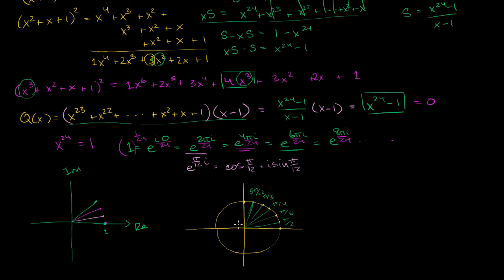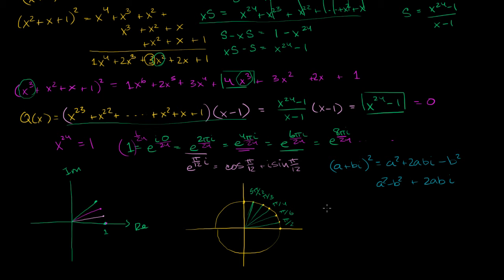Before we keep going, this will simplify the math a bit. Remember, we're going to have to square these roots. So if we have some complex number a + bi, let's think about what happens when we square it. This is going to be a² + 2abi − b², or (a² − b²) + 2abi. So the imaginary part is 2ab, and all that matters is the absolute value of 2ab, or 2 times the absolute value of ab.